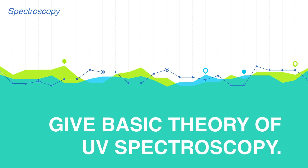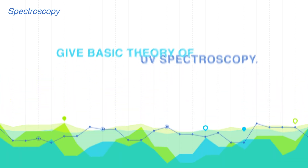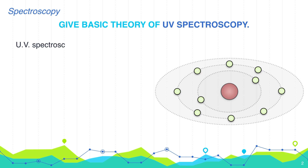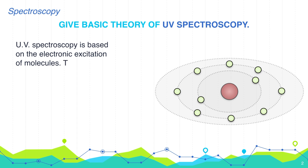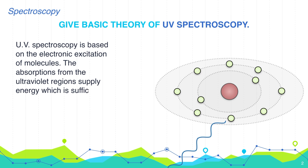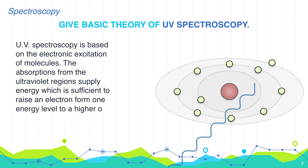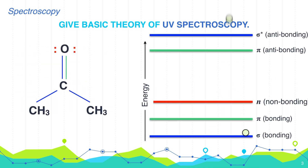UV spectroscopy is based on electronic excitation of molecules. The absorption from the UV region supplies energy sufficient to raise an electron from one energy level to a higher level. According to the molecular orbital approach, the absorbed energy of light is used to transfer an electron from a bonding or non-bonding molecular orbital to an anti-bonding molecular orbital.